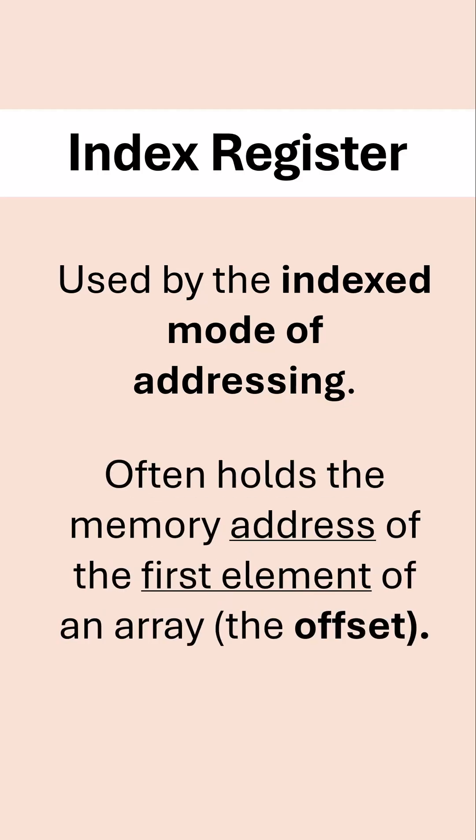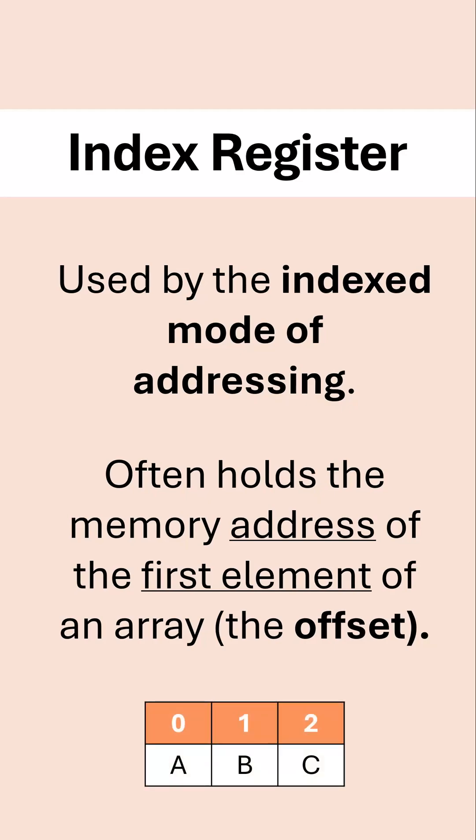Most often we use indexed addressing when we are dealing with arrays. In this case, the index register will hold the memory address of the first element of the array. This is sometimes called the offset.